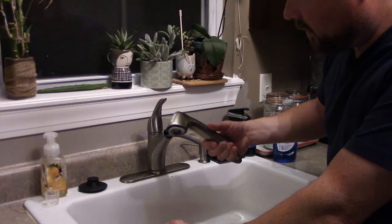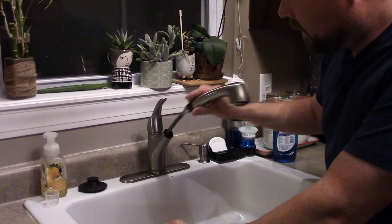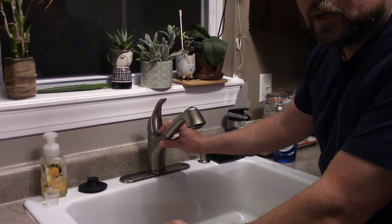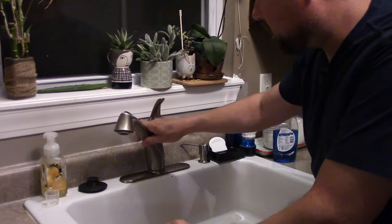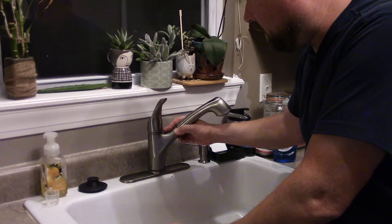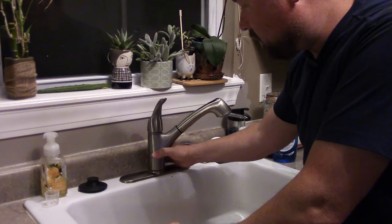Anyways, this is one of these standard pull-out sprayer type faucets. This is a Moen, doesn't matter if it's Moen or Delta, they're kind of all built the same way. It's really, really stiff. I mean, it's supposed to go all the way over there. As you can see, I feel like I'm getting ready to crack it or something.